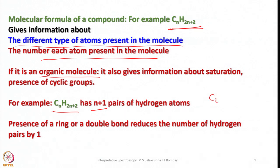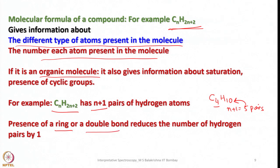For example, if we take C4H10, N is 4, so N+1 equals 5 — there are 5 pairs of hydrogen atoms. Presence of a ring or a double bond reduces the number of hydrogen pairs by 1. If there is a ring or a double bond, it reduces the number of hydrogen pairs by 1.